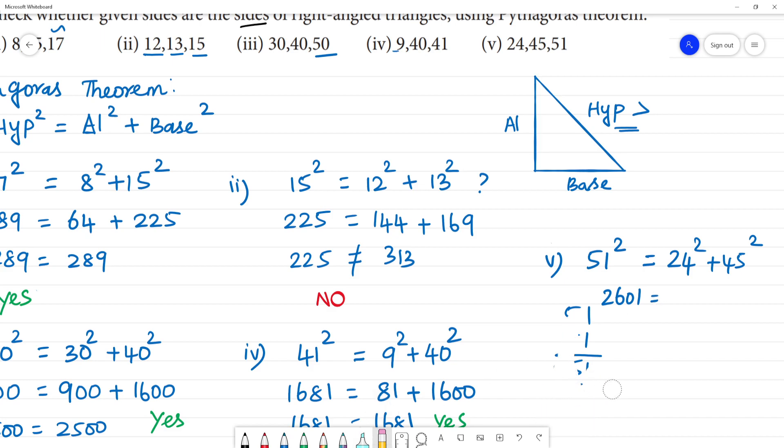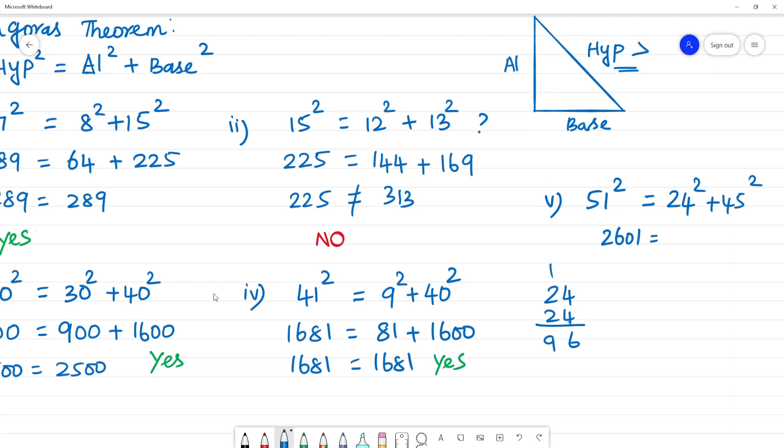Equal to 24 square. 24 multiplied by 24: 4 times 4 is 16 remainder 1, 4 times 2 is 8 plus 1 is 9. So this is 576.